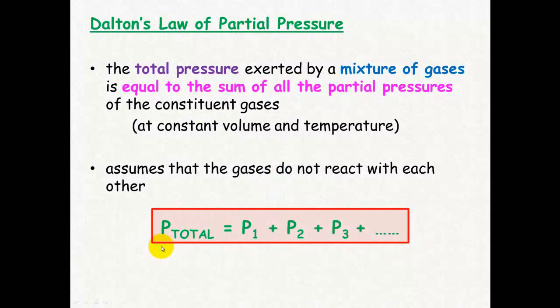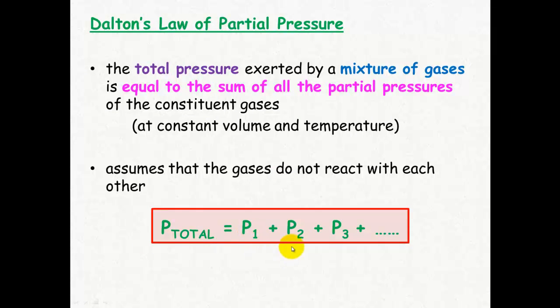So the formula we come up with is the pressure total is equal to the partial pressure of the first gas plus the partial pressure of the second gas plus the pressure of the third gas and so on.